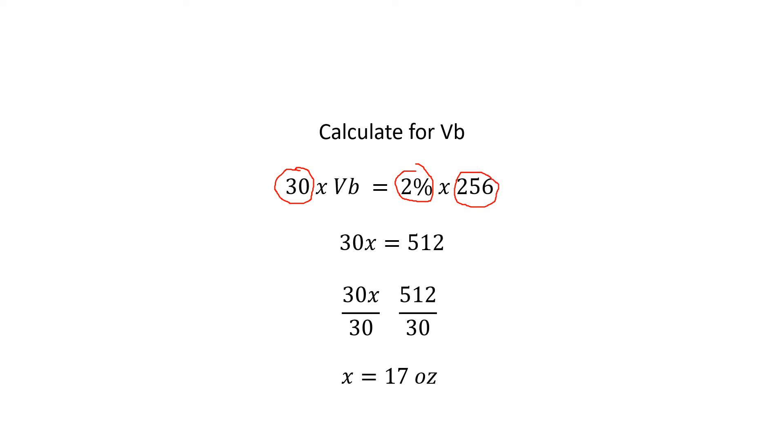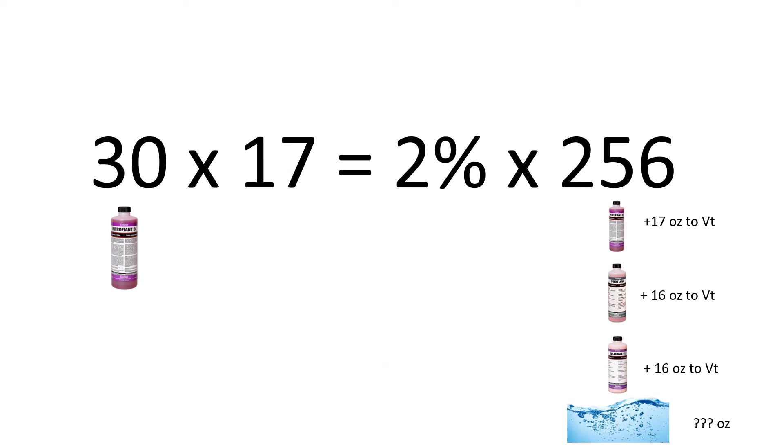The next thing to do is to calculate for the VB so we can add that to our total volume. We will set up our equation with 30 index, VB is a question mark, our CT is 2%, and our VT is 256. We will combine our CB and VB together. And we will also multiply 2% by 256 to arrive at 512. Then to separate the variable here away from the 30, we will divide both sides by 30 and arrive at a VB of 17 ounces. So now we have 30 index fluid. We know that we are going to need 17 ounces of that 30 index fluid to create a 2% solution strength and 256 ounces in our total volume.